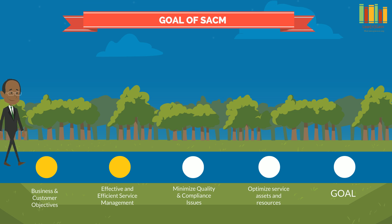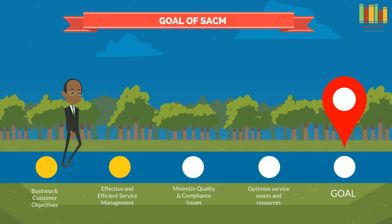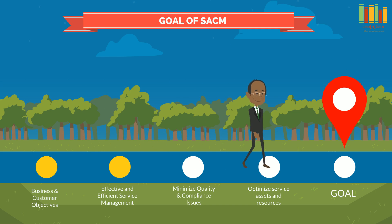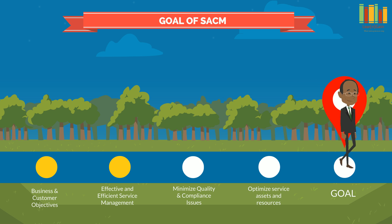The goal of SACM is to support the business and customer objectives and requirements. It supports effective and efficient service management processes by providing accurate information. It also aims to minimize the number of quality and compliance issues caused by improper configuration of assets, and to optimize service assets, IT configurations, capabilities, and resources.